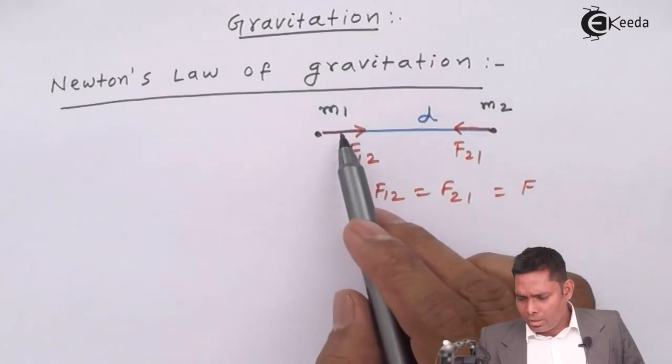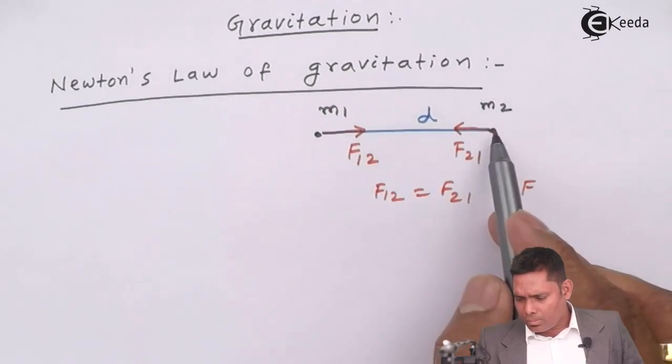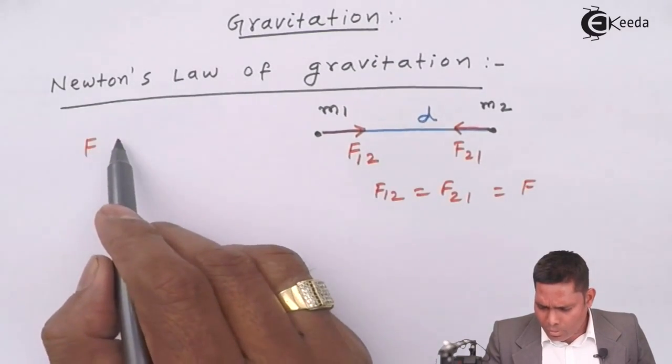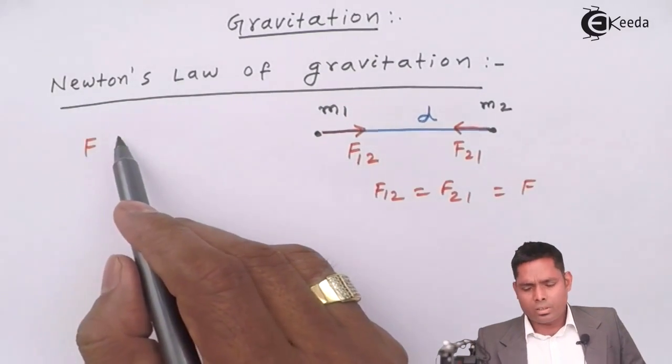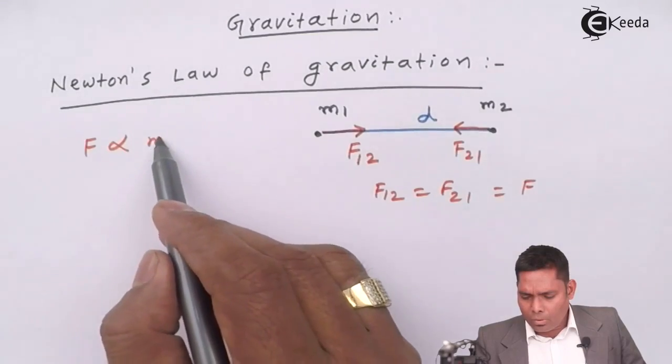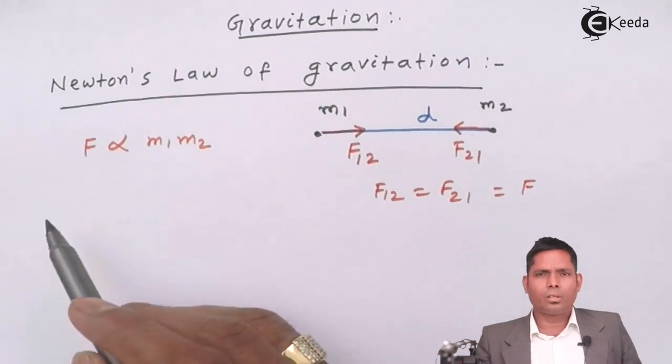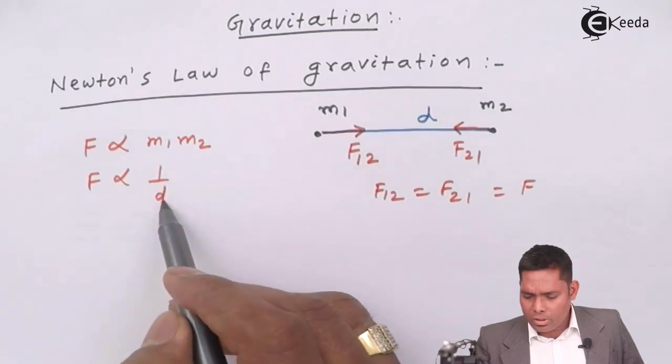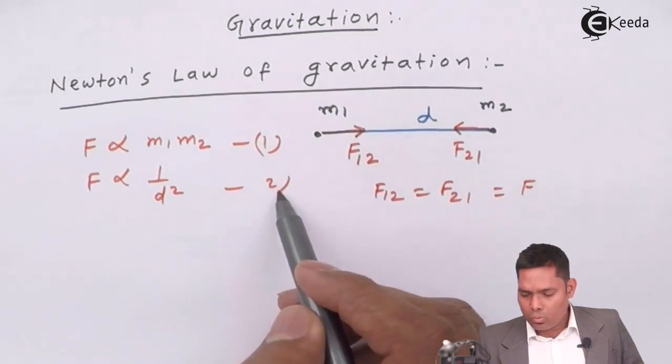This force acting on this mass or this mass is given, say this force of attraction is directly proportional to the product of their masses and inversely proportional to the square of the distance between them.